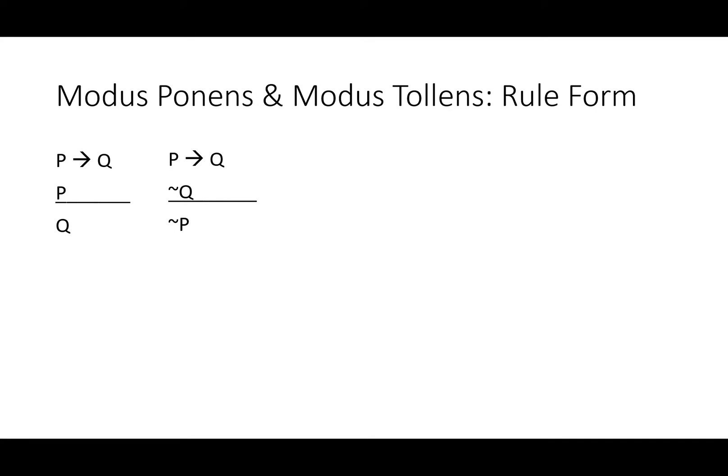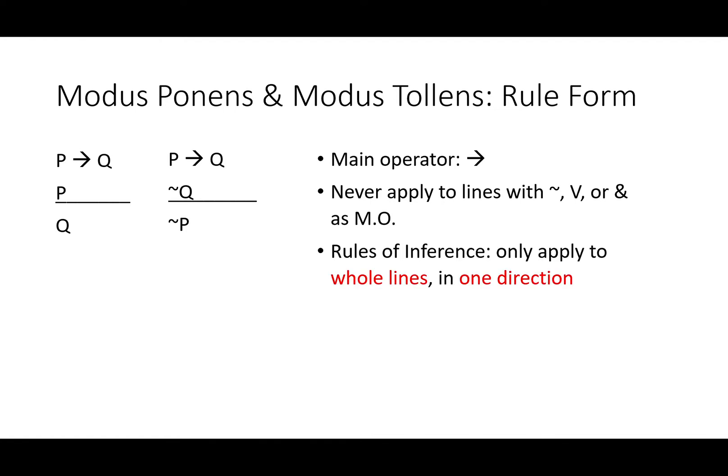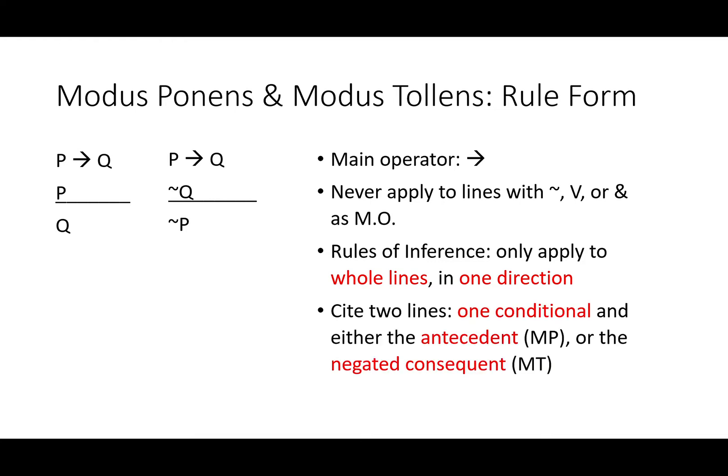Let's sum up the rule form of modus ponens and modus tollens. First, they must both have a line with an arrow or conditional as the main operator — this will never work if you only have 'not', 'or', or 'and'. As rules of inference, these apply only to whole lines and only in one direction. Every time you use these rules, you'll cite two lines: one conditional, and either the antecedent for modus ponens or the negated consequent for modus tollens.